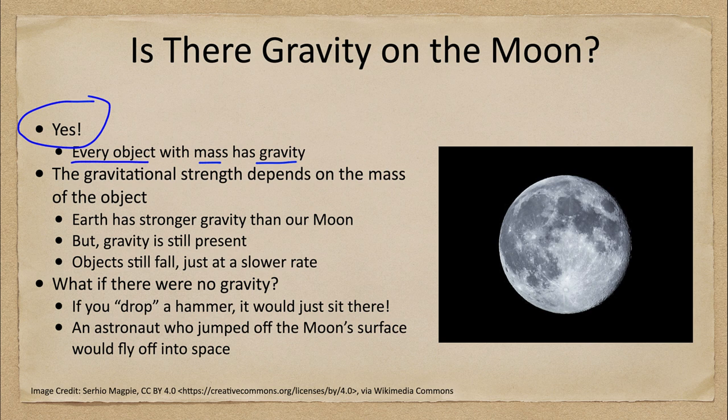But the difference is that the strength of gravity depends on the mass. So therefore, the Moon will have less gravity than Earth because it has a smaller mass, just as you or I would have a smaller gravity than the Moon because we are even smaller. Any object with mass — we can calculate the gravitational force between that and any other object. So Earth has stronger gravity than our Moon, but the gravity is still present.